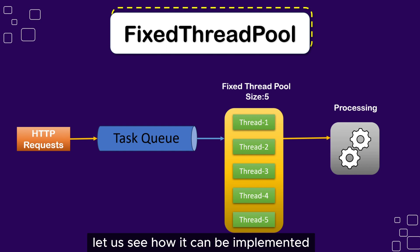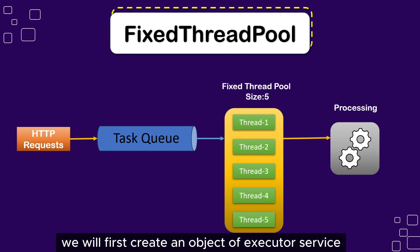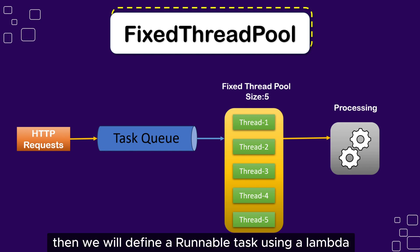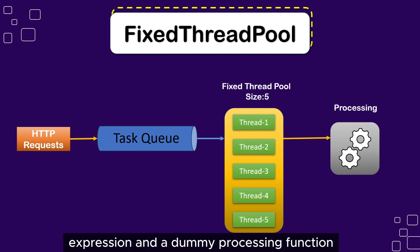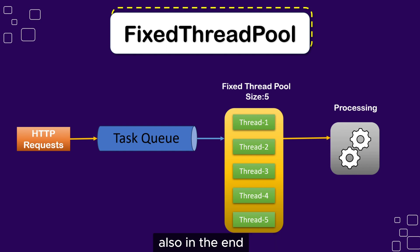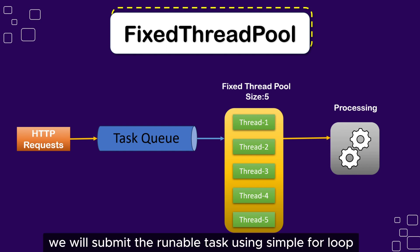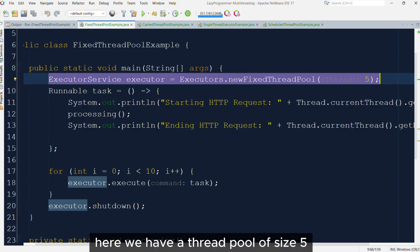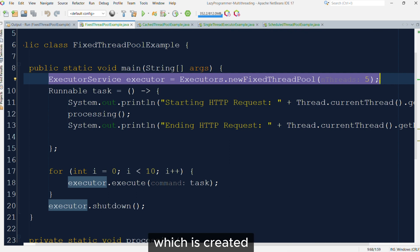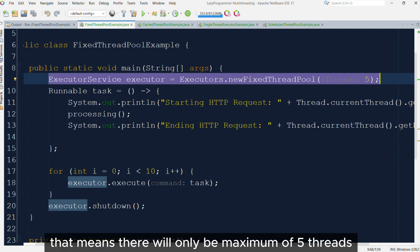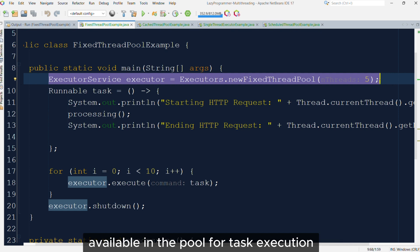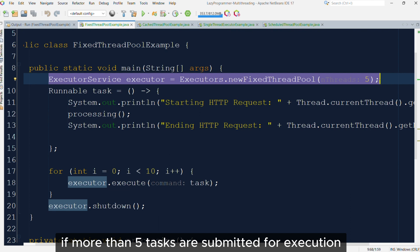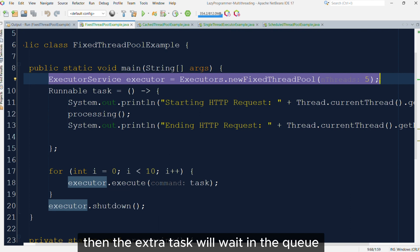Let us see how it can be implemented. In this implementation, we will first create an object of ExecutorService and then define the thread pool size. Then we will define a runnable task using a lambda expression and a dummy processing function. In the end, we will submit the runnable task using a simple for loop to mimic multiple concurrent HTTP requests. Here we have a thread pool of size 5. That means there will only be a maximum of 5 threads available in the pool for task execution. If more than 5 tasks are submitted, then the extra tasks will wait in the queue until any executing thread becomes free.